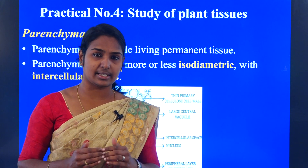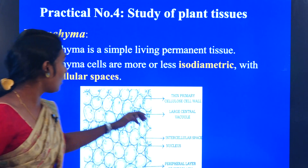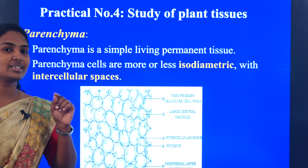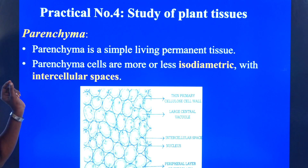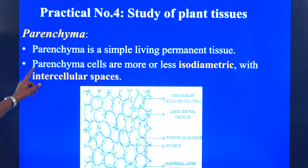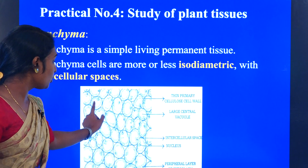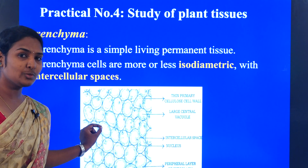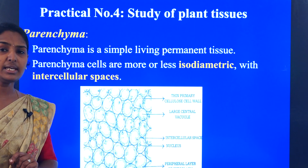We already know what we mean by tissue — a tissue is a group of cells. If we study in detail, simple tissue is again categorized into different types. The first one we call it as parenchyma tissue. Parenchyma we call it as simple living permanent tissue. It is simple in nature and living in condition. Parenchyma cells are more or less isodiametric with intercellular spaces — that means each cell will have the same diameter. Along with that, it will have intercellular spaces.